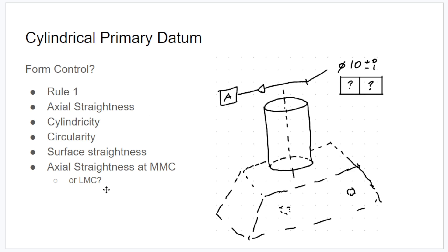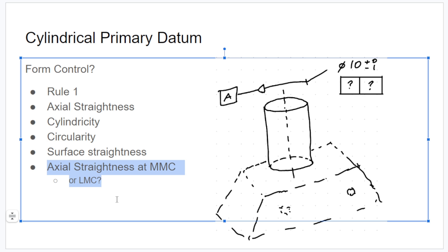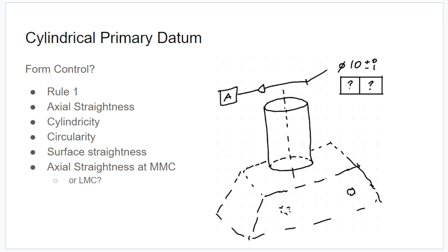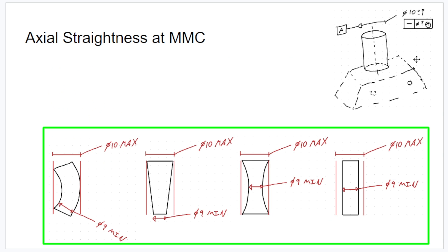And last but not least, another bonus one, axial straightness at MMC or LMC, I suppose. But axial straightness with a material modifier. And this is what started the conversation at work because I had applied a straightness tolerance at MMC to the primary datum. And my coworker, who's pretty tuned in said, what, why are you doing that? Why don't you just use rule number one? And I said, that's an excellent question.